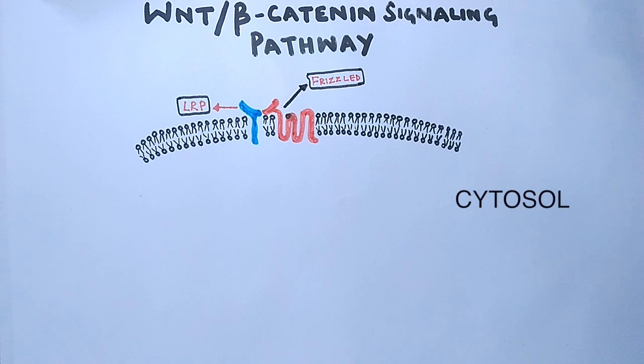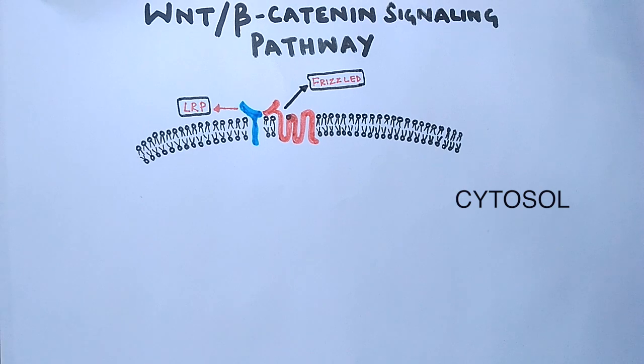Now let's get to the pathway directly. We have two conditions for the pathway. First is when there is no WNT signal present. Second is when there is presence of signal, that is WNT protein is present.